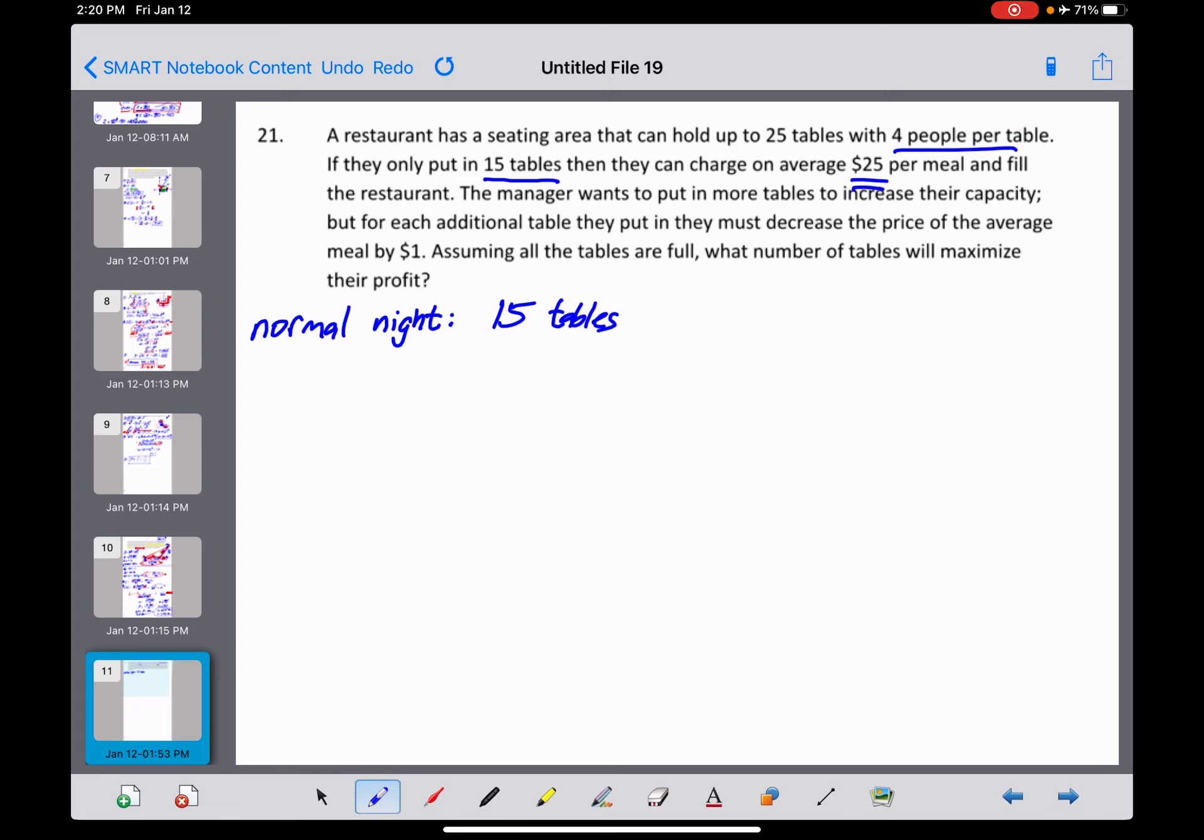So if we were to multiply the 15 tables times 4 people per table times $25 per meal, that 4 times 25 means $100 they're going to make per table, and at 15 of them, sounds like they're going to make $1,500 on a quote-unquote normal night.